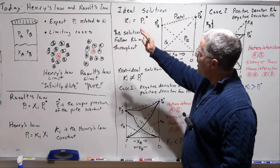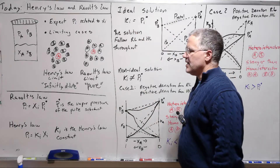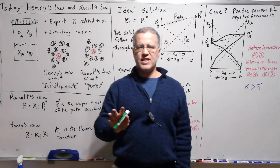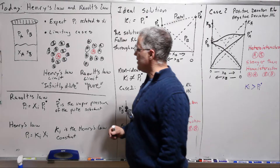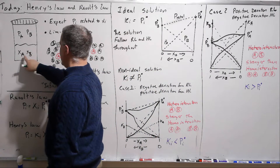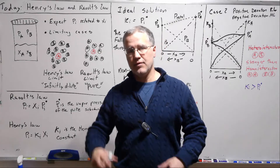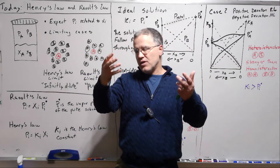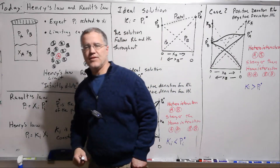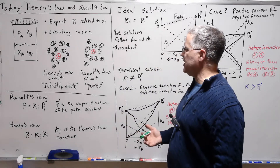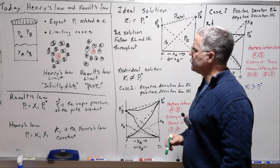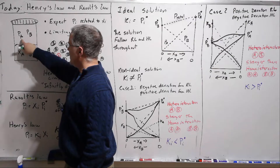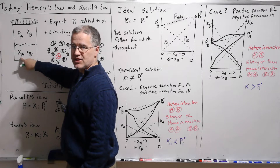Today we're going to talk about Henry's law and Raoult's law. This is a way of dealing with solutions of A and B — we're going to stick to binary mixtures here. If we have a liquid solution with mole fraction A and mole fraction B in a sealed container, there's going to be some vapor above this container with a partial pressure due to A and a partial pressure due to B. Henry's law and Raoult's law give us a way to get the partial pressure from the mole fraction and vice versa.